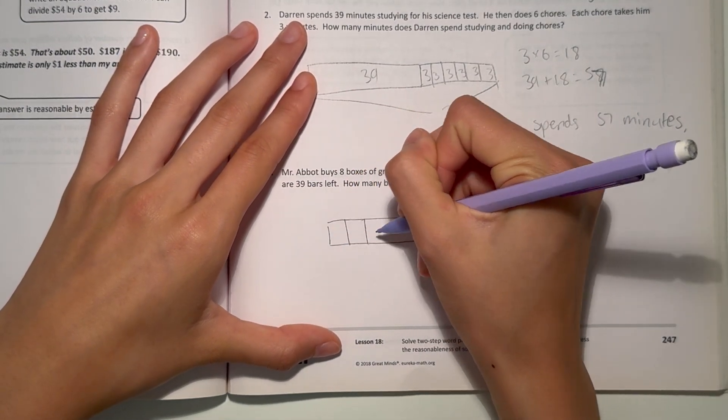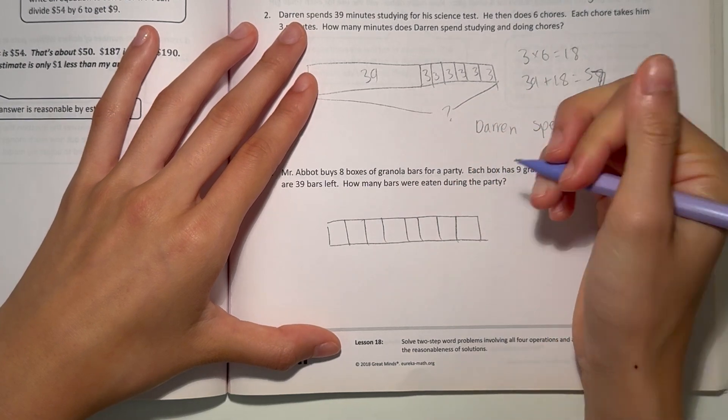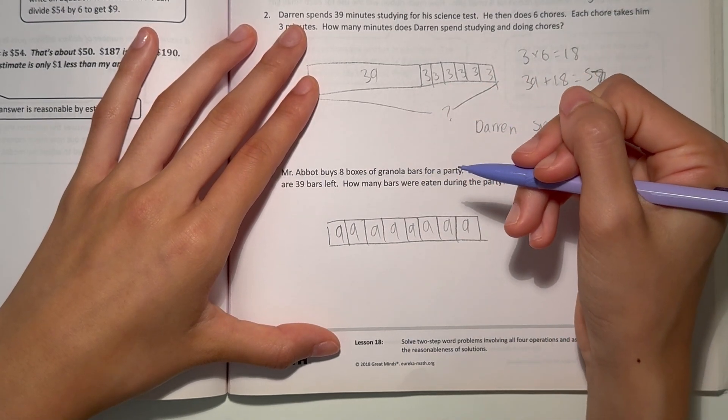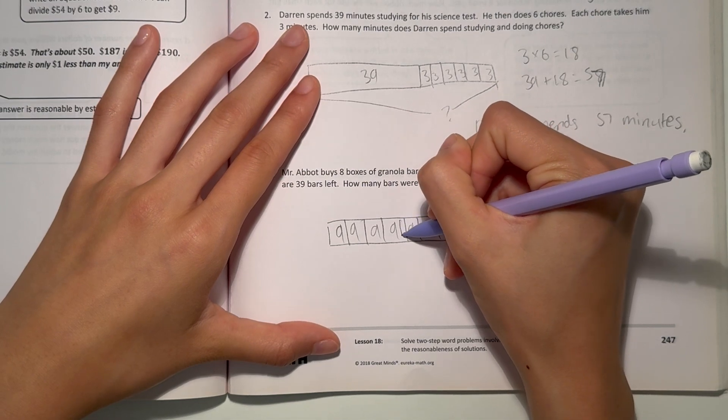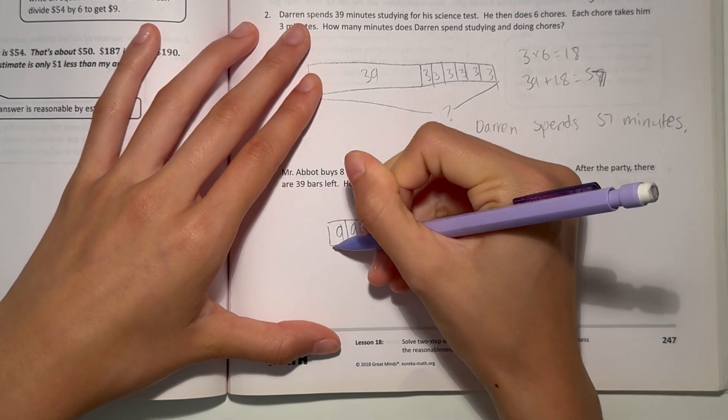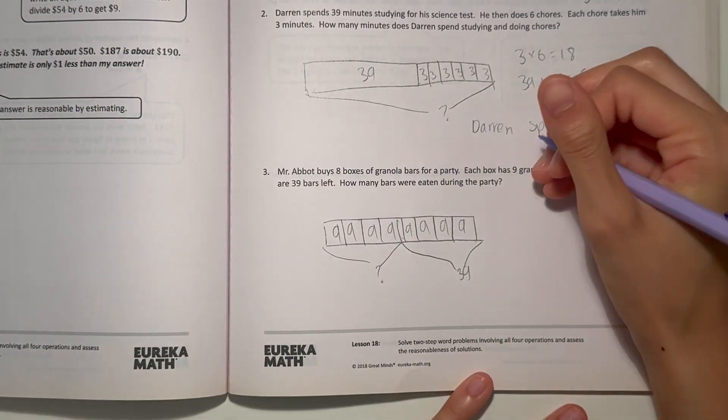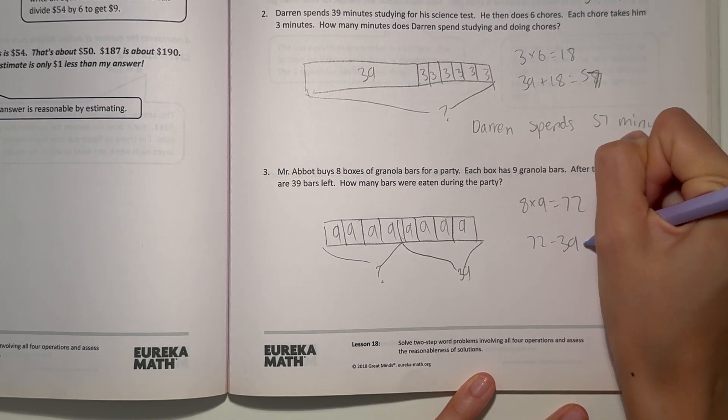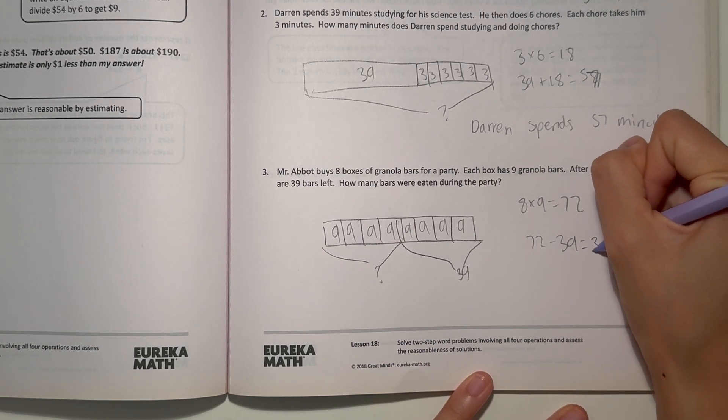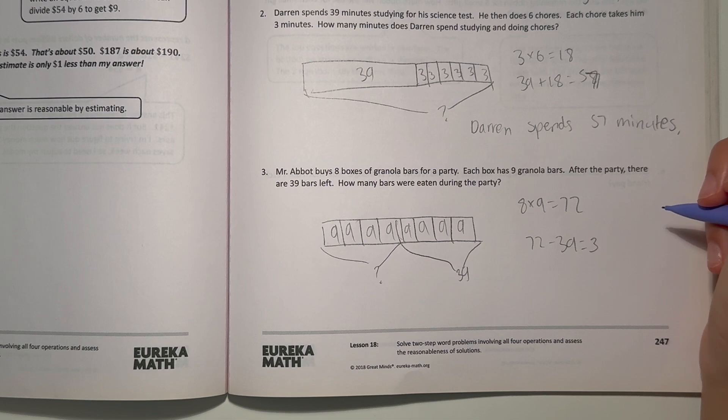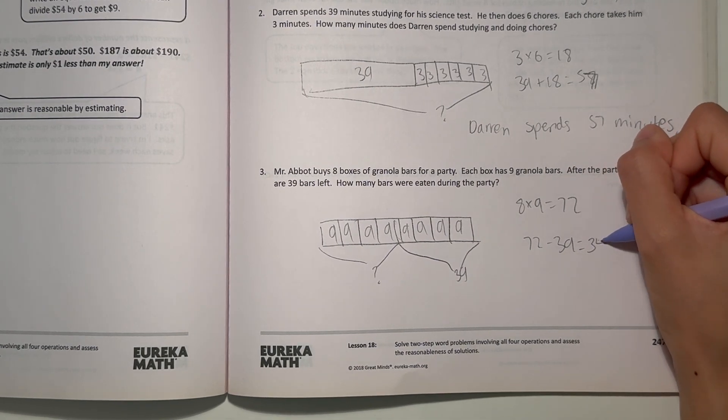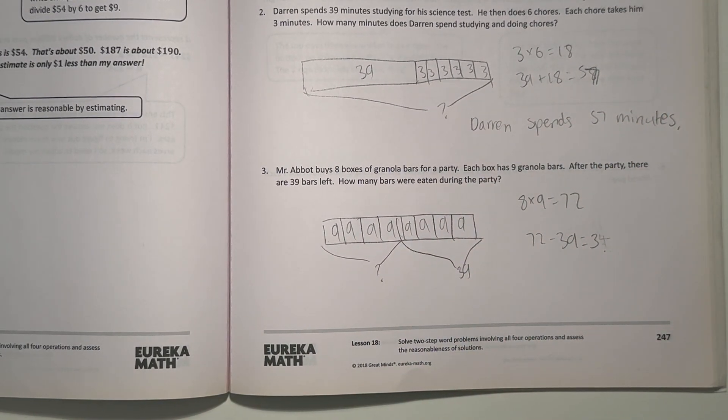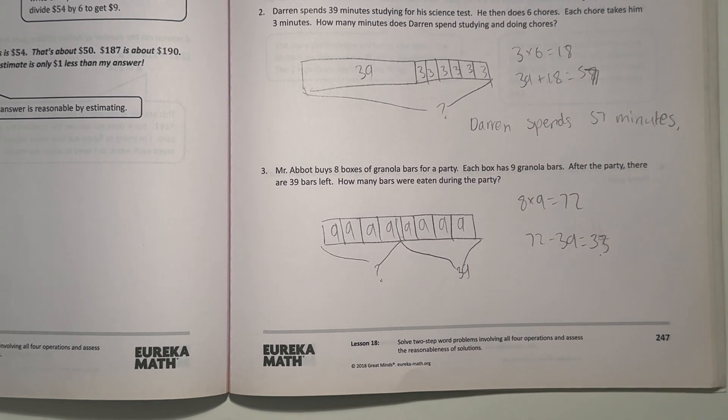8 boxes. And each box has 9 granola bars. After the party, there were around 39 bars left. So how many bars were eaten? Well, let's see. 8 times 9 is 72. That's how many there was in total. 72 minus 39. 72 minus 39 is 39. Wait, oh wait. Did I say 72 minus 39 is 34? 72 minus 39. 33, 33. Alright. So 33 bars were eaten.